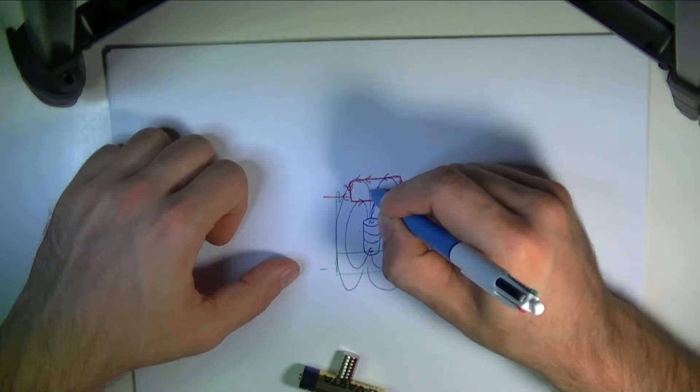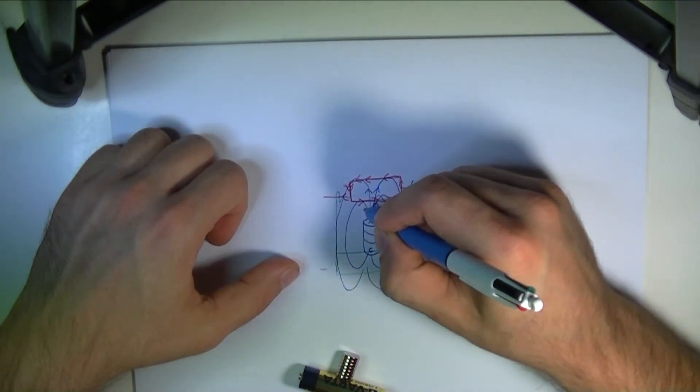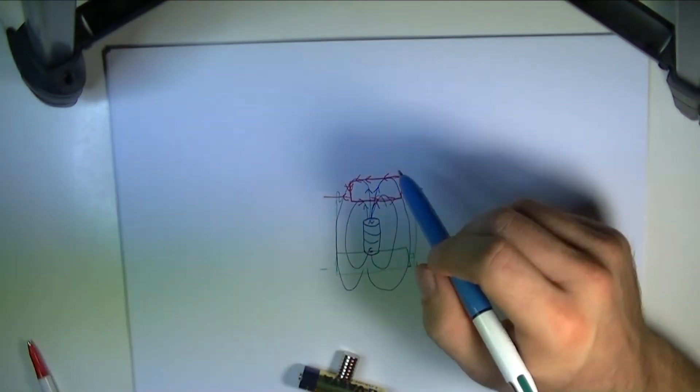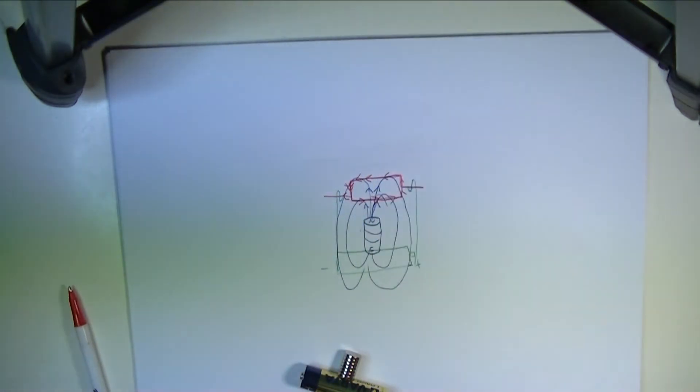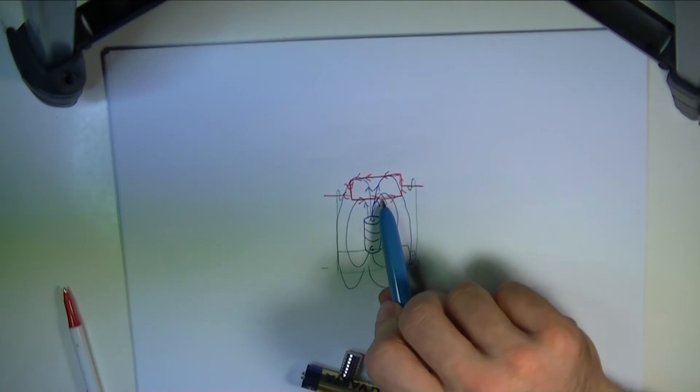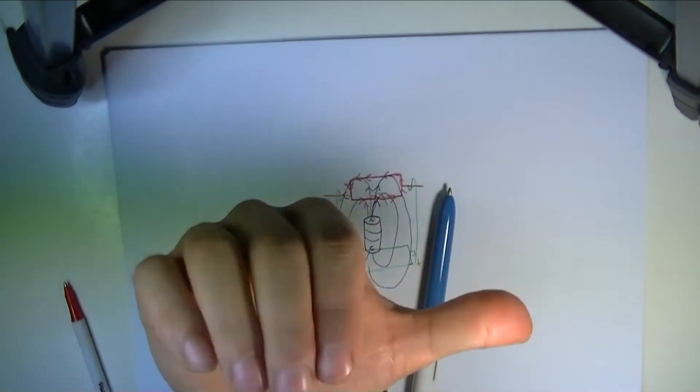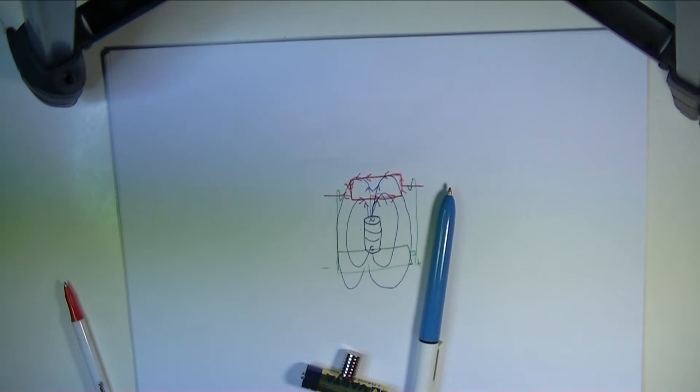Now these arrows are all pointing up and what happens when this magnetic field hits the magnetic field generated around this wire. This wire is going to have its field generated using the right hand rule and what happens in this interaction is given by another hand rule, the left hand rule.